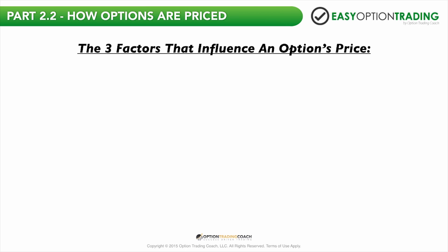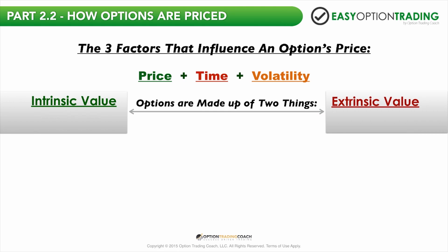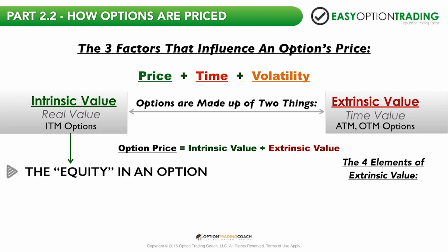The three factors that influence the price of an option, whether it be a call or put, consist of price, time, and volatility. Options are made up of two different things: intrinsic value and extrinsic value. Intrinsic value is known as the real value in your option, and extrinsic value is known as the time value in an option. Intrinsic value is found in in the money options, and extrinsic value is found in your at the money or out of the money options. The four elements that comprise extrinsic value include time decay, implied volatility, interest rates, and dividends.